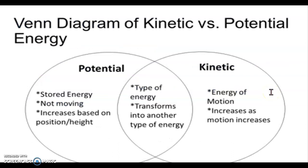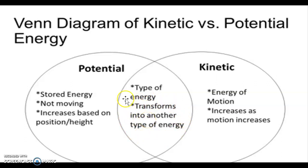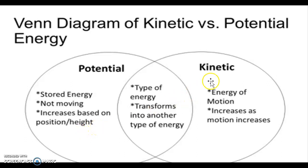Here is a Venn diagram comparing and contrasting kinetic and potential energy. Potential and kinetic are the same type of energy, and it also shows how energy is being transformed from one to another. Potential energy refers to stored energy — energy in objects that are not moving — and it increases based on position and height. Kinetic energy is the energy of motion and it increases as motion increases.